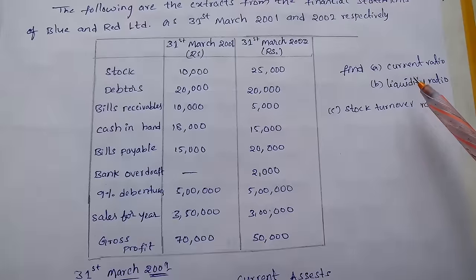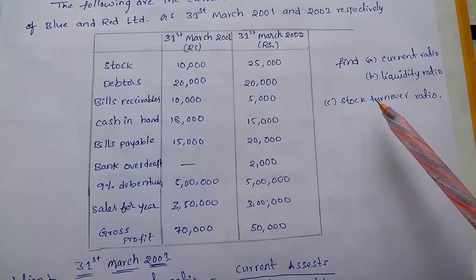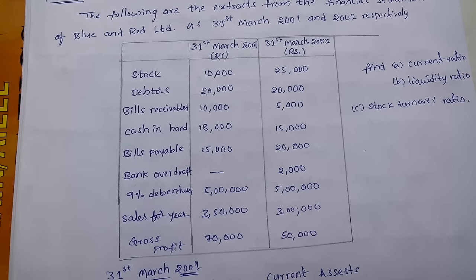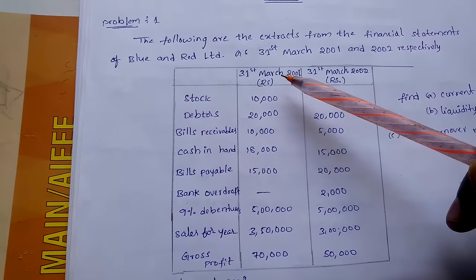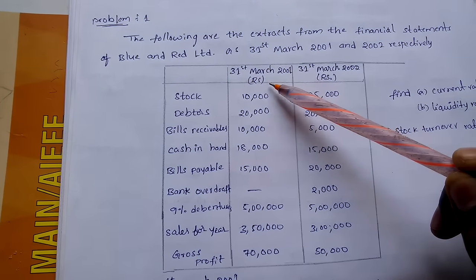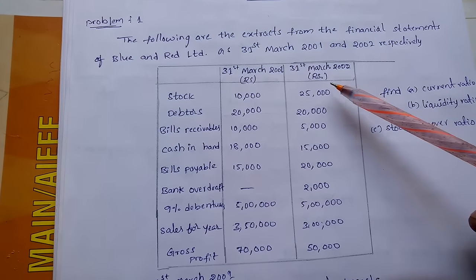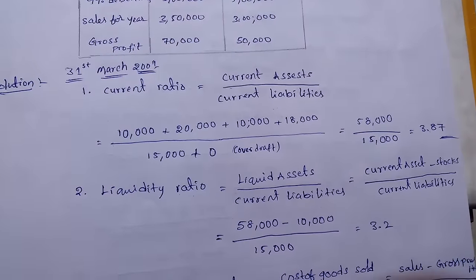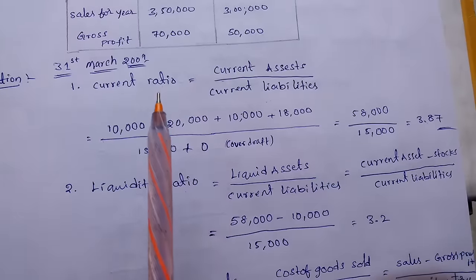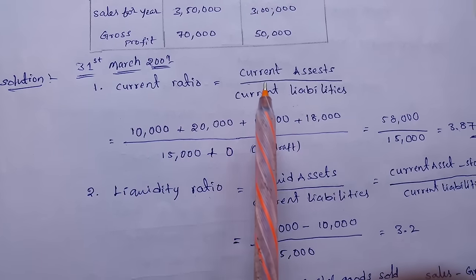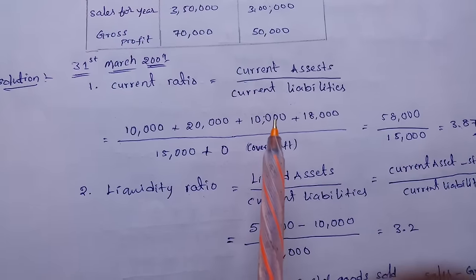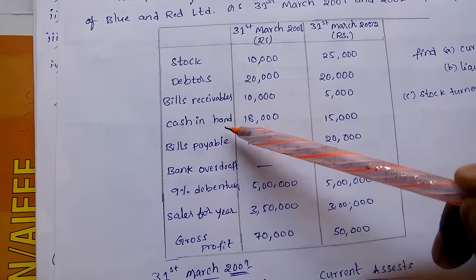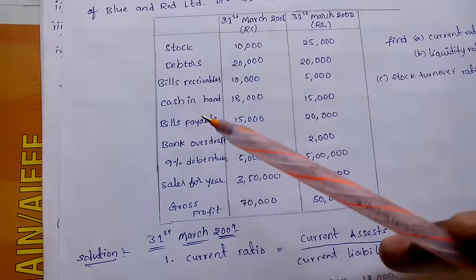We need to find out the current ratio, liquidity ratio, and stock turnover ratio — stock turnover ratio is nothing but the inventory turnover ratio. We are solving for 31st March 2001. The formula for current ratio, which we learned in the last session, is current assets divided by current liabilities. The current assets here are stock, debtors, bills receivables, and cash in hand.